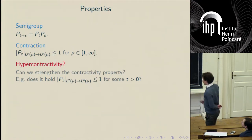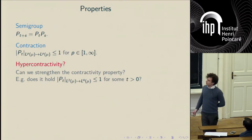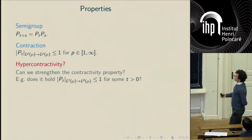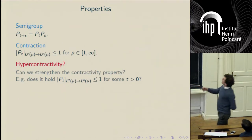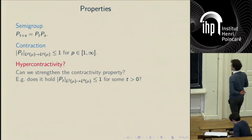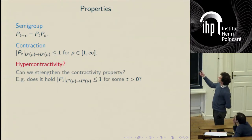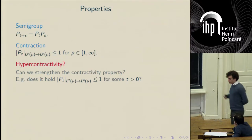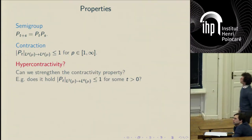But people want to know more. In the 70s, people from quantum field theory started to ask: can we improve this contraction property? For instance, can we have the norm of P_T from L^2 to L^4 be smaller than 1 for some positive t? Of course if t equals 0 this cannot be true, but after some time, does my semi-group improve the integrability of my function?